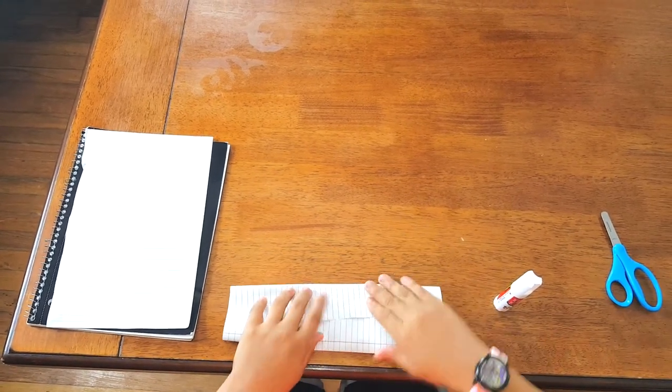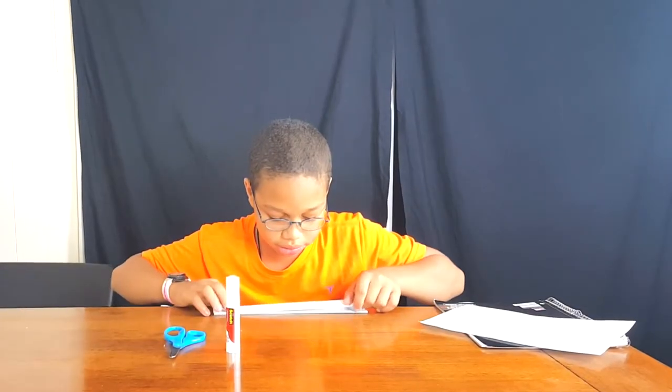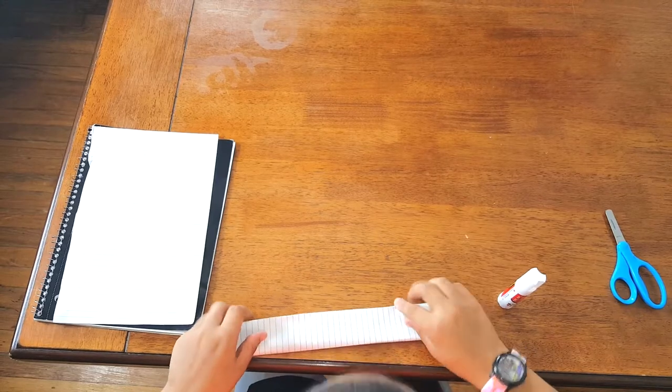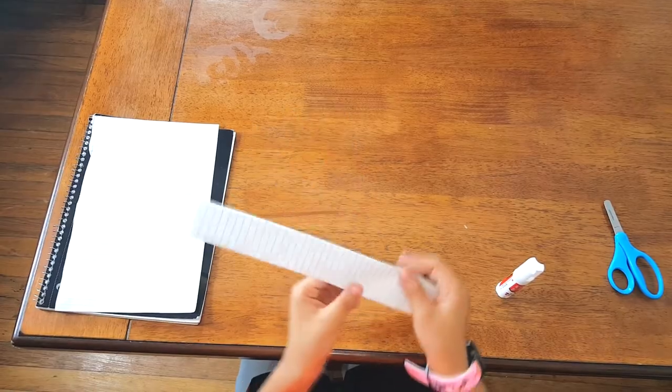And fold it with the other, same thing, on a different angle. Fold it once more time. Then you're going to do this. Smooth it out exactly like this.